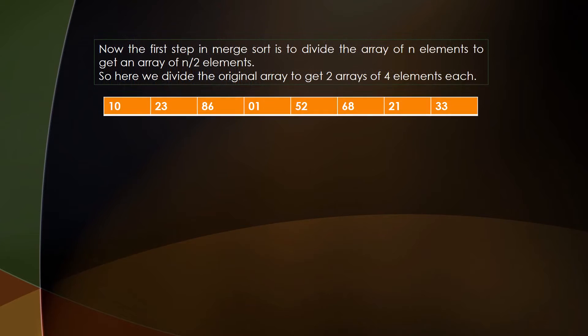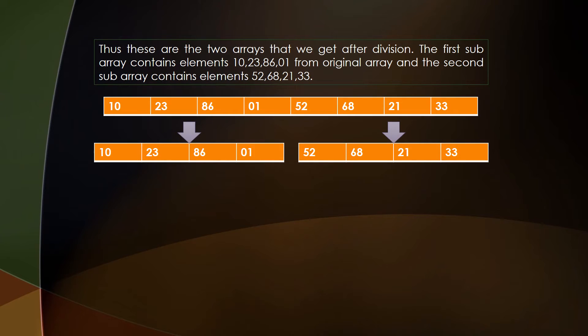Now the first step as stated earlier is to divide the array of n elements to get an array of n/2 elements. So we will divide this given array into two sub-arrays of four elements each. Here it is, we have divided this array to get two sub-arrays of four elements each.